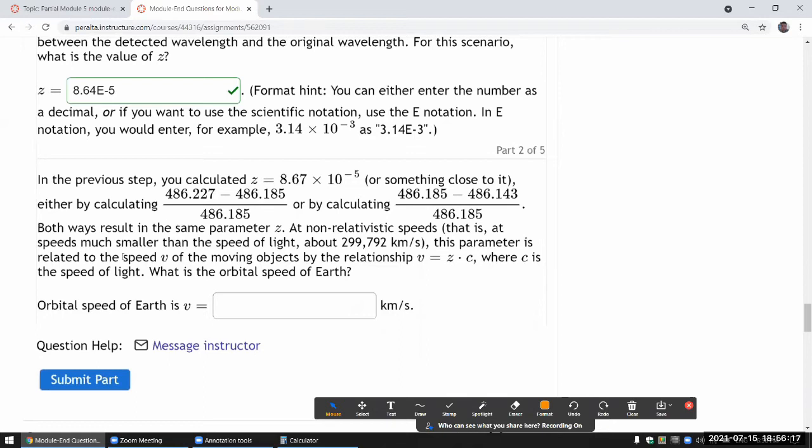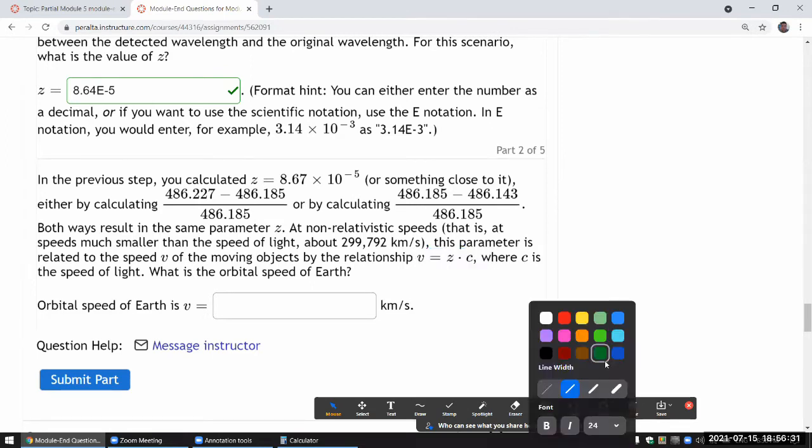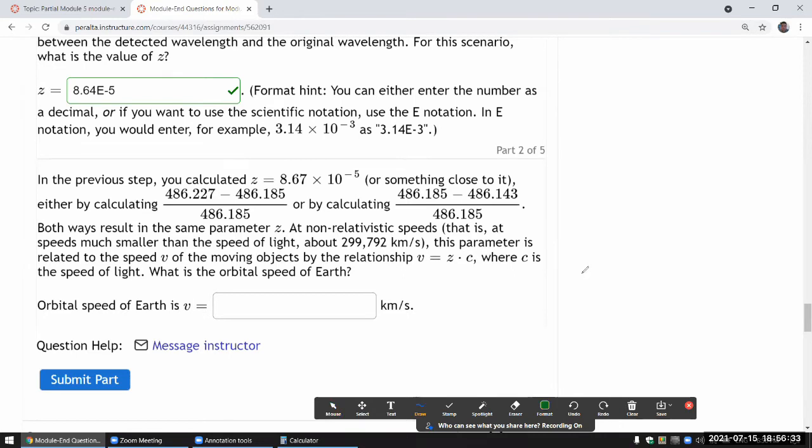Okay, this parameter is related to the speed of moving object by this relationship. This comes from, I think, in the textbook, it's given. This is the equation or expression that you might see somewhere in the examples of the textbook in chapter 5, that z is equal to V over C. Or actually, I guess the textbook doesn't, in that portion, they don't use the parameter z. They just say V over C is equal to delta lambda over lambda naught. And so this is the relationship that I'm referring to. And you solve this for V to get this.